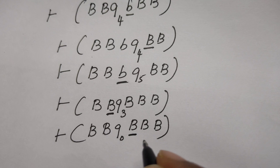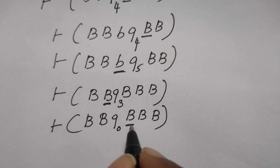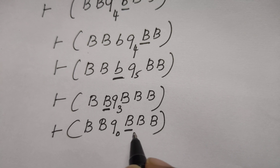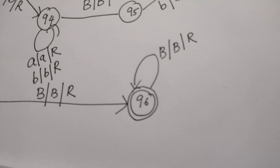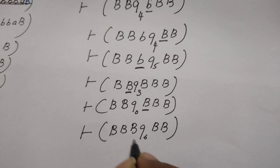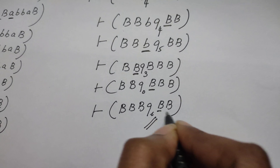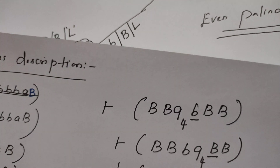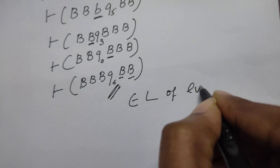From q0, the head now reads only blank symbols — there are no a's or b's remaining. The first half of the string has been matched with the second half. When q0 reads the blank symbol, the state changes to q6, the final accepting state. From q6, the Turing machine reads the remaining blank symbols, confirming the string belongs to the language of even palindromes.